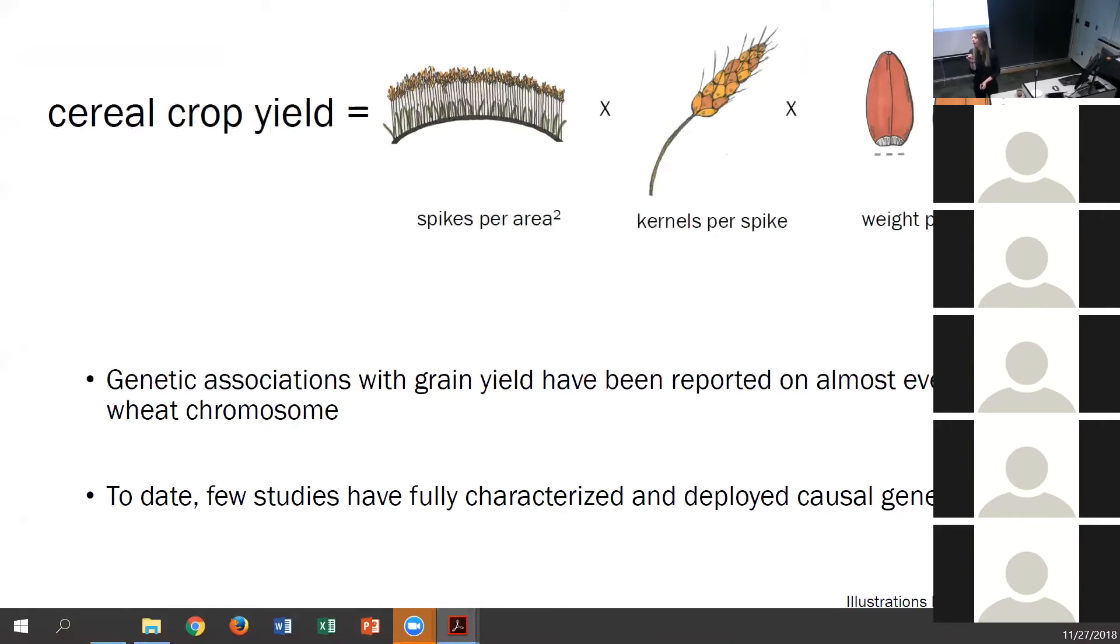Part of that is due to the fact that the wheat genome is very large and hexaploid and also that yield itself is a quantitative trait. It's controlled by many small effect variants across the genome. And even these three simplifications illustrated here are quantitative traits themselves that are often negatively correlated. Considering this, it's important when we're studying yield to break it down into its individual components.